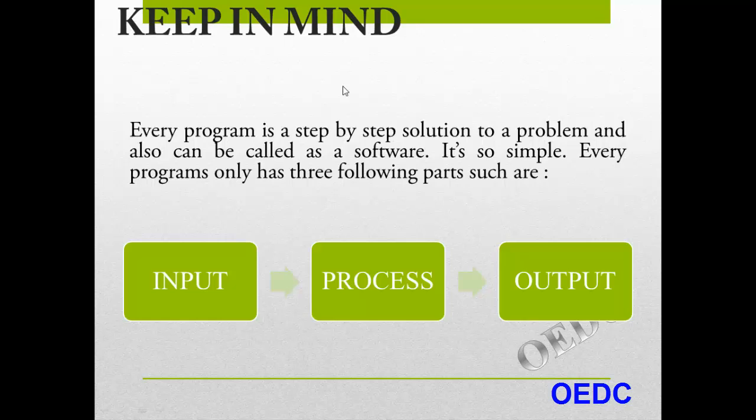For that purpose, we can write a step-by-step program, and that can be called software. For example, MS Paint — we can write a program. Calculator — we can write a step-by-step program. It's very simple.